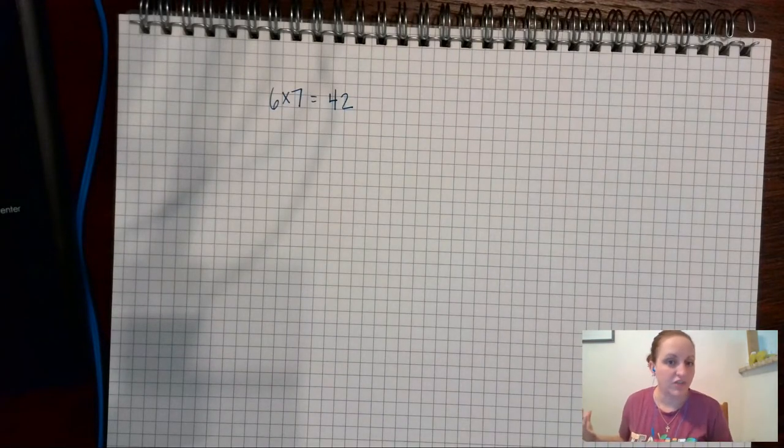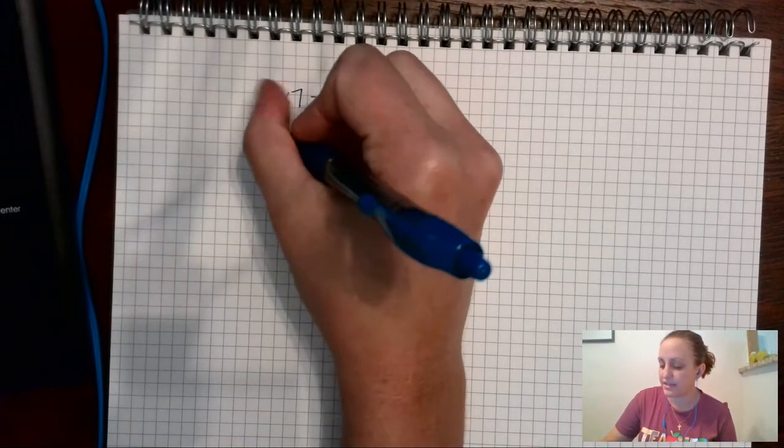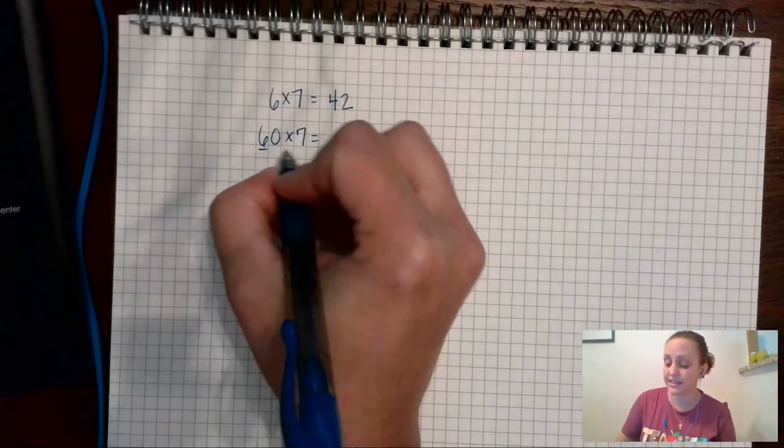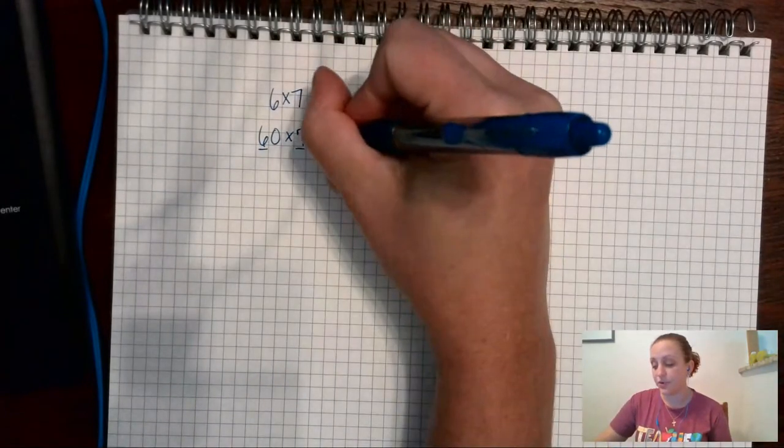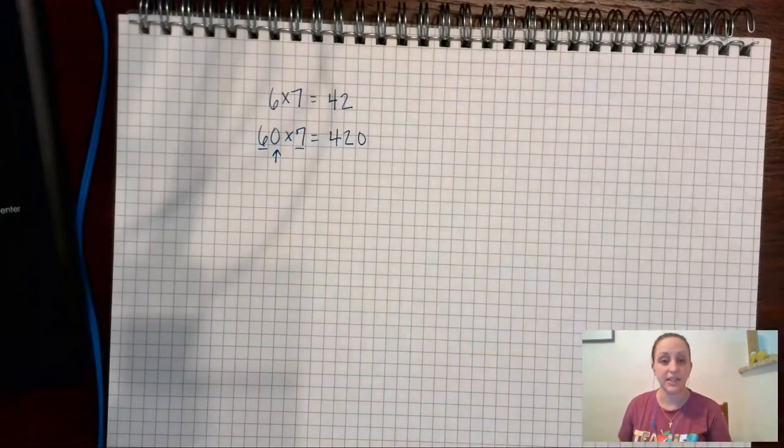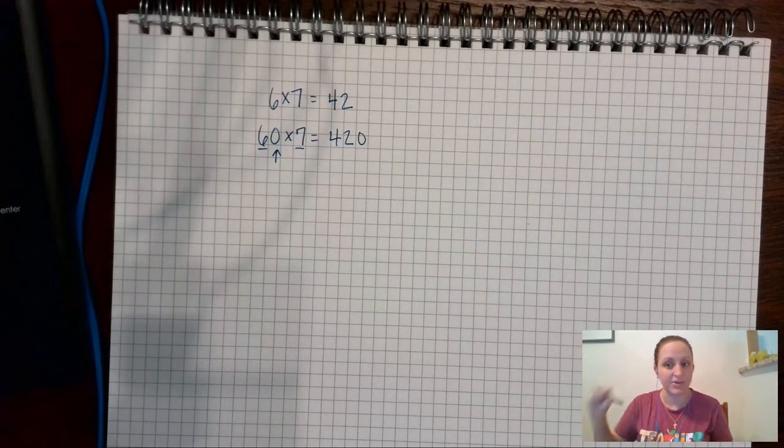Now I can use multiples of 10 to help me figure out bigger multiplication facts. So if I just add zero to the end and I have 60 times 7, I'm still looking at 6 times 7 is 42 and then there's one zero there, so I add one zero to the end because I'm dealing with multiples of 10. And every time you're multiplying by 10 you add zeros to the end, right?